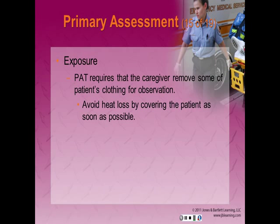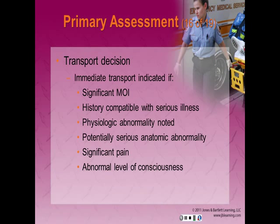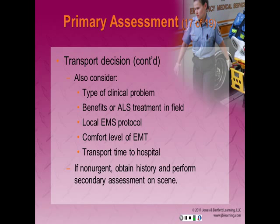For exposure, you must remove some of the patient's clothing for observation, especially the face, chest wall, and skin. Be careful to avoid heat loss by covering the patient as soon as possible. Immediate transport to the hospital is indicated for: a significant mechanism of injury including falls from a height equal to or greater than the patient's height, especially head-first; bicycle crashes; a history compatible with serious illness; a physiologic abnormality noted during the primary assessment; significant pain; altered mental status; or signs and symptoms of shock. Also consider the type of clinical problem, expected benefits of ALS treatment, local EMS protocols, and transport time to the hospital.